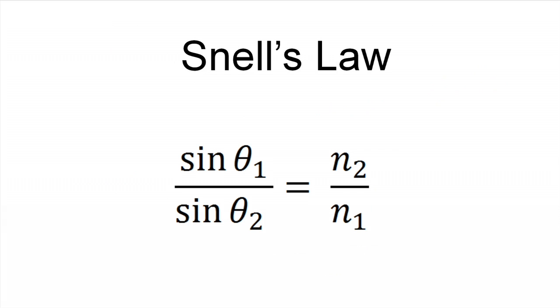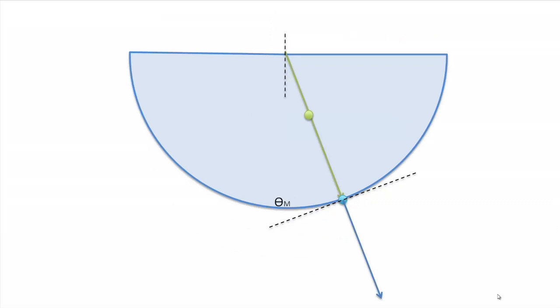Snell's law relates the angle of incidence and refraction to the refractive indices of the two media. An important point to note is that light passing through the center of any circular object is always normal to it. So in our case the refraction will take place only at the flat surface of the half circle.